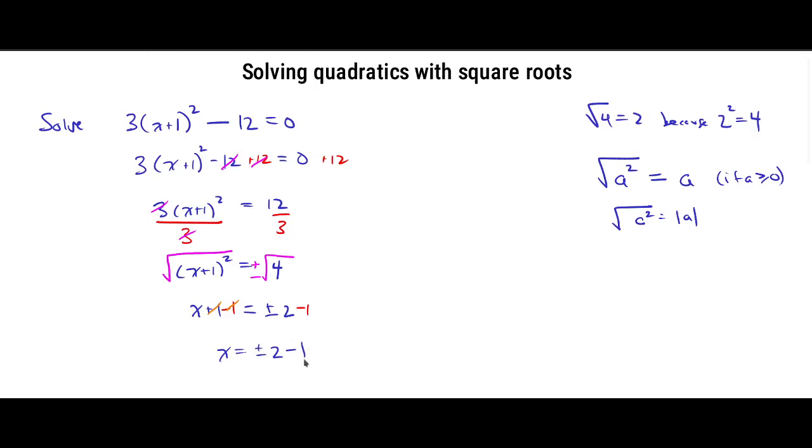This is really telling us that there are two solutions. What are those two solutions? Well, we can figure it out like this. We can take the plus or minus 2 minus 1 and split it up along the positive sign and the negative sign. So we could take plus 2 minus 1 or minus 2 minus 1. 2 minus 1 is just 1. Negative 2 minus 1 is negative 3.